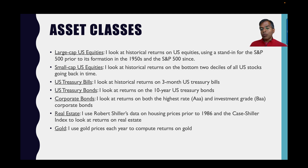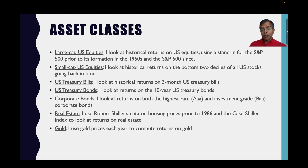What stocks fall into those deciles will vary across the years. I also look at returns on U.S. Treasury bills — these are short-term three-month T-bills, the historical returns you'd have earned putting your money in those. I also look at returns on 10-year U.S. Treasury bonds; returns include both coupons and price appreciation. Incidentally, for equities, remember you can get returns from dividends as well as price appreciation — I look at both components. I also look at returns on corporate bonds, both at the highest rating, AAA, and investment grade BAA corporate bonds, going back in time.